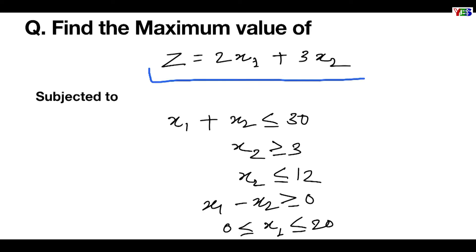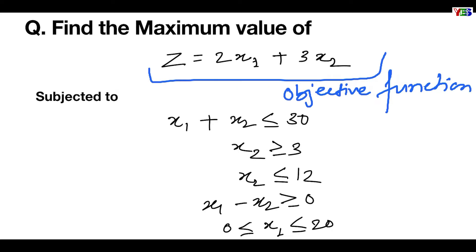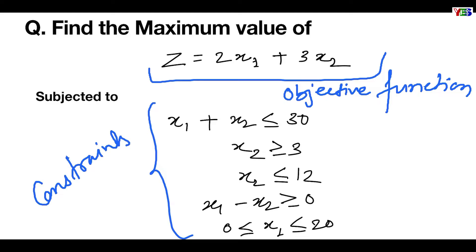Here, z equal to 2x1 plus 3x2 is our objective function, where the objective in this problem is to find out the maximum value of z. These are our constraints, and under these constraints we have to maximize the value of z. We will solve this problem using the graphical method, as all the equations are linear.